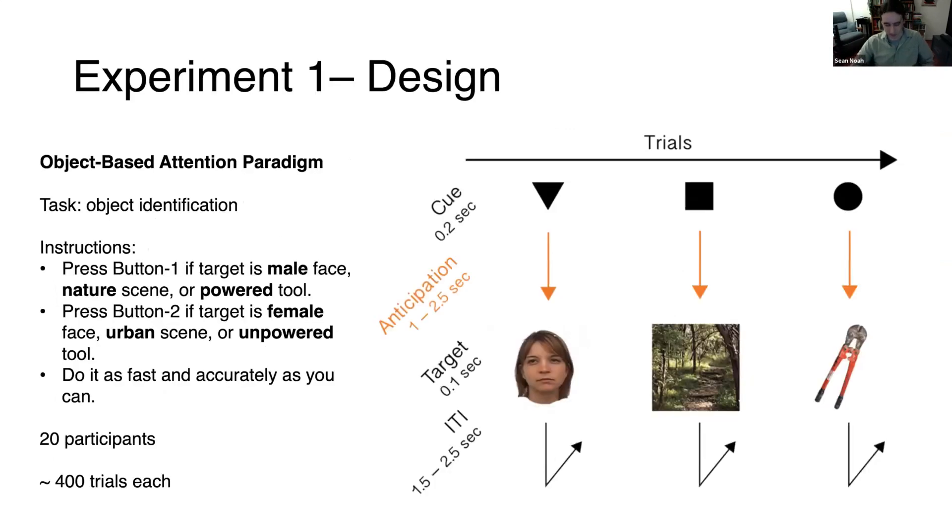The first experiment was an anticipatory object-based attention experiment. We used arbitrary shape cues to alert our participants to the subsequent appearance of one of three object categories. We had 60 different exemplars for each object category. Our object categories were faces, scenes, and tools. Within the framework that we're working in, we're thinking of objects as high-level visual representations of visual input, higher than lower-level features such as color, motion, or orientation.